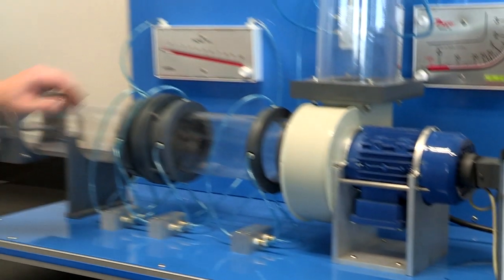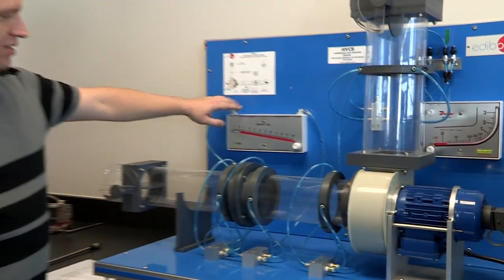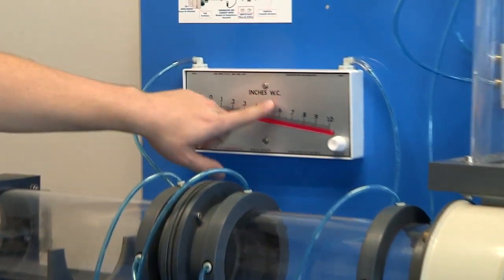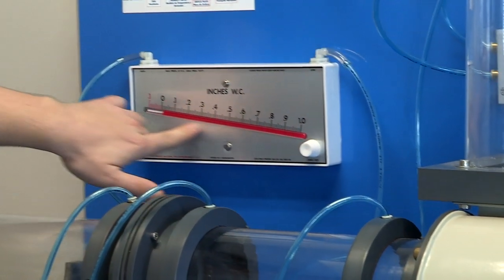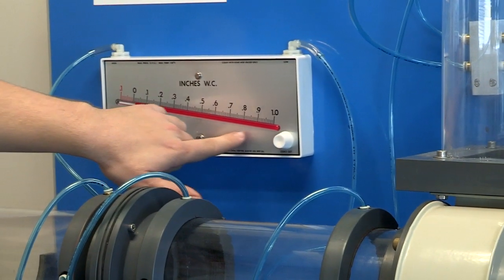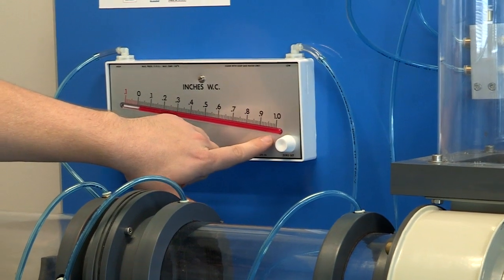Right here, this is going to be the inlet and it's in water columns. So you're going to have your manometer right here so you can read the water column in inches.